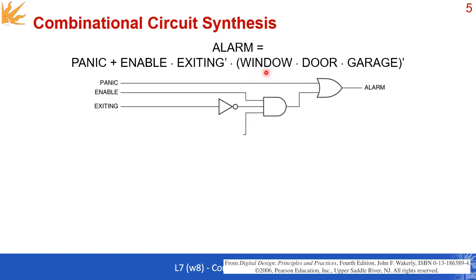As you can guess, this should be another subfunction of WINDOW, DOOR, and GARAGE negated. You start with the negation here, and you have another AND gate with three inputs: WINDOW, DOOR, and GARAGE.